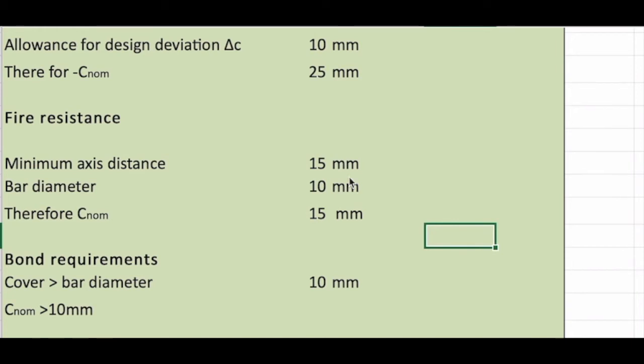For fire resistance, the minimum axis distance is 15 mm, which we get from that chart in the how to design manual. And the bar diameter is 10 mm which we assume. Therefore, nominal cover will be 15 mm.